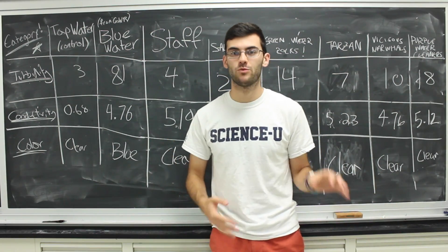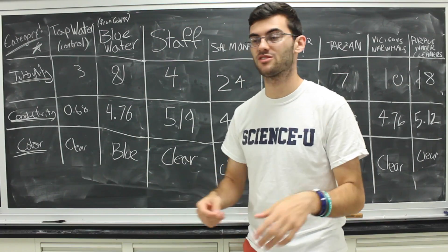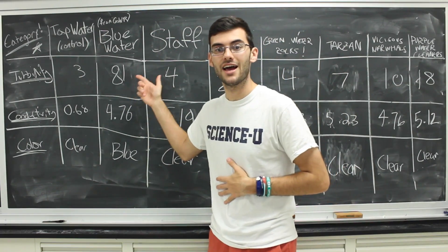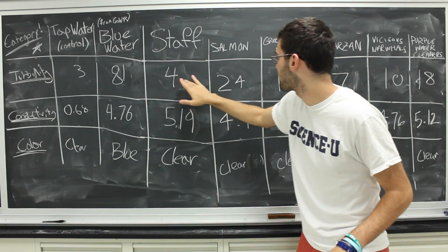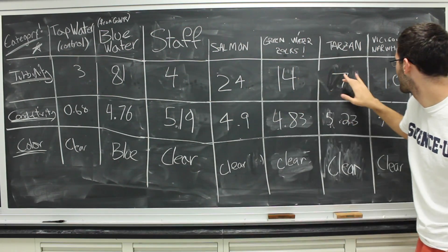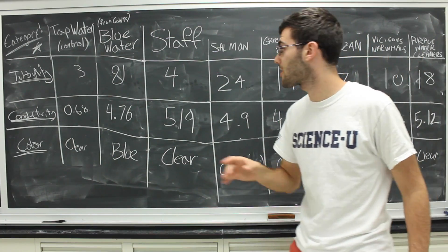Now, when we initially started this experiment, we were looking for a filter that would most reduce the salinity and the turbidity of the solution. The turbidity certainly was reduced. With 81 as a base rate, we had some groups get 4, 24, 14, 7, all numbers that were much lower than 81.